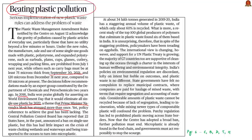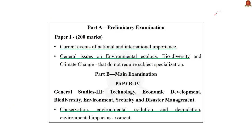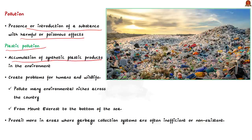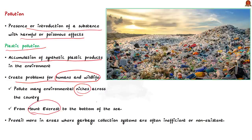Based on this context, we will have a comprehensive discussion about plastic pollution, its impact, and the important points mentioned in the article. Pollution refers to the presence or introduction of a substance with harmful or poisonous effect into the environment. There are different kinds of pollution like air, water, etc. Plastic pollution refers to the accumulation of synthetic plastic products in the environment to the point where they create problems for humans and wildlife.